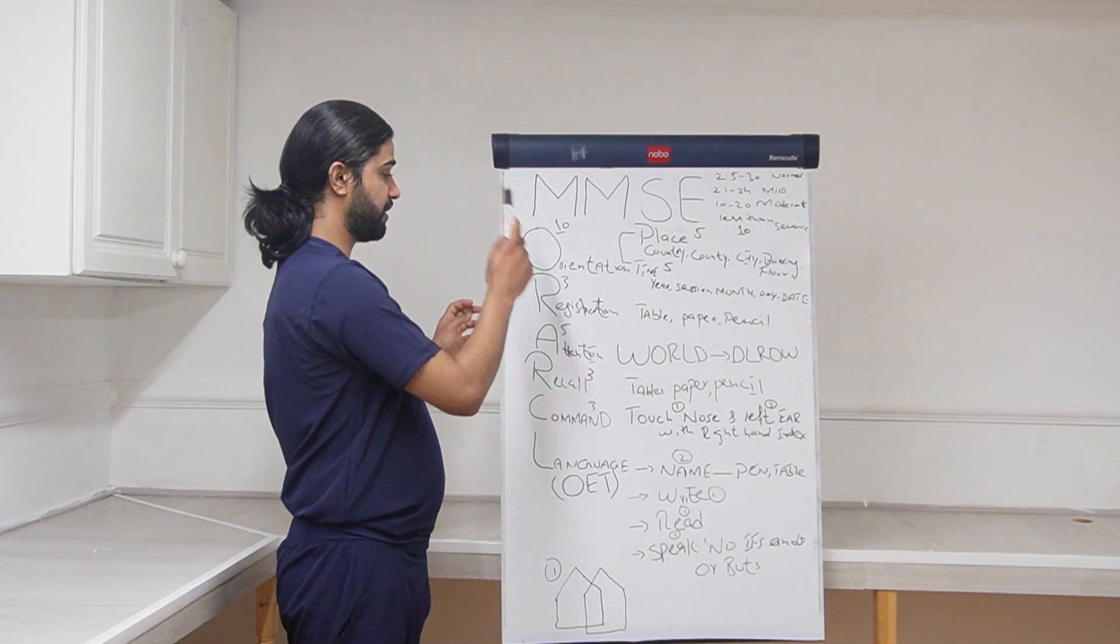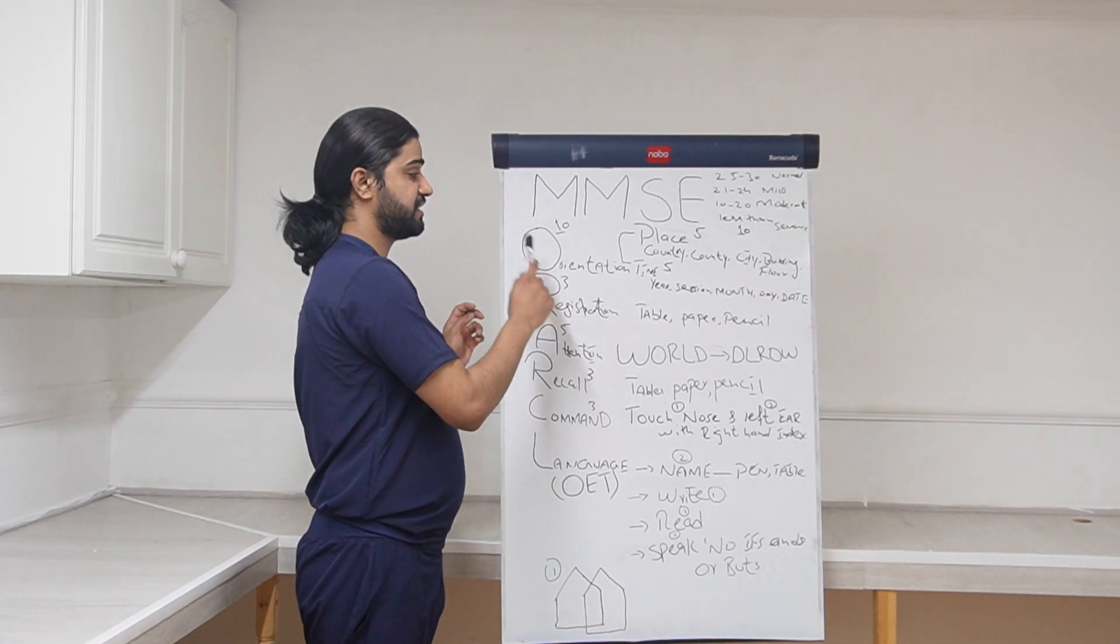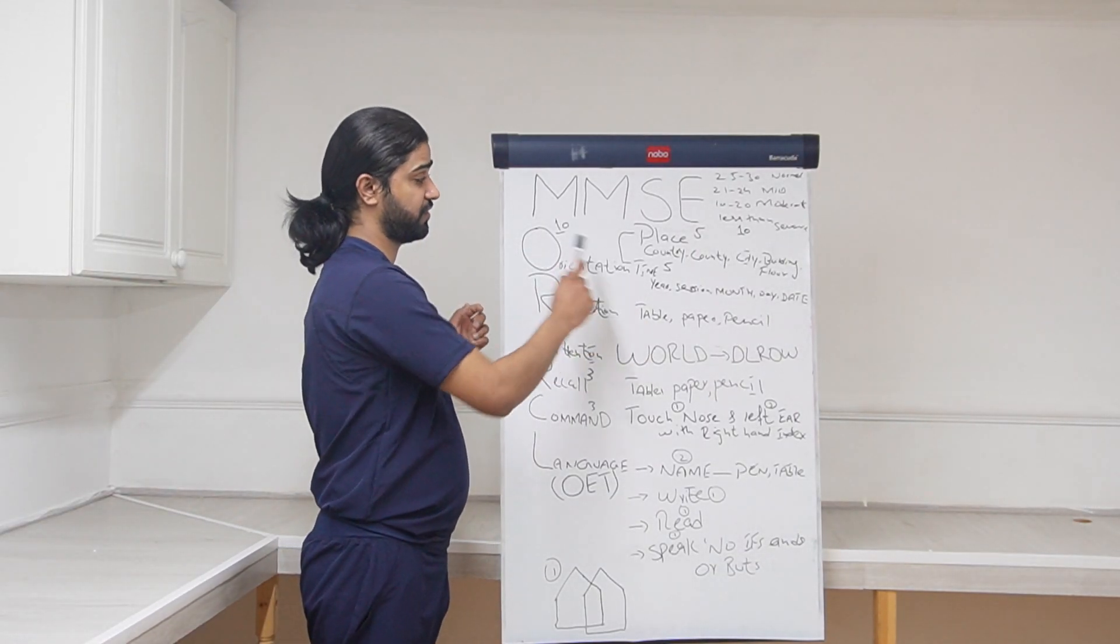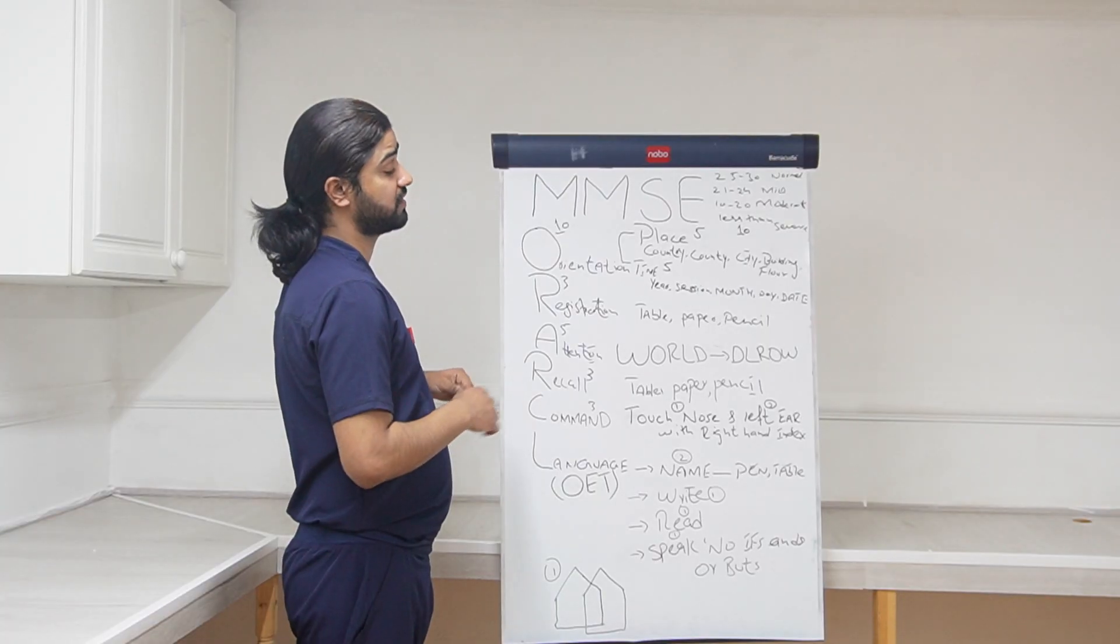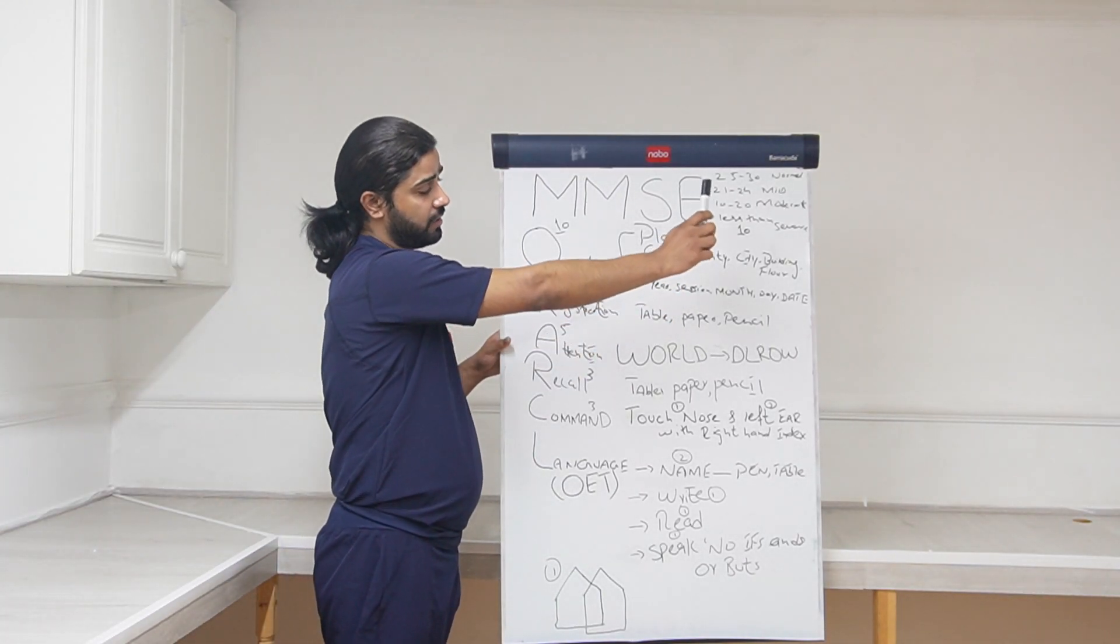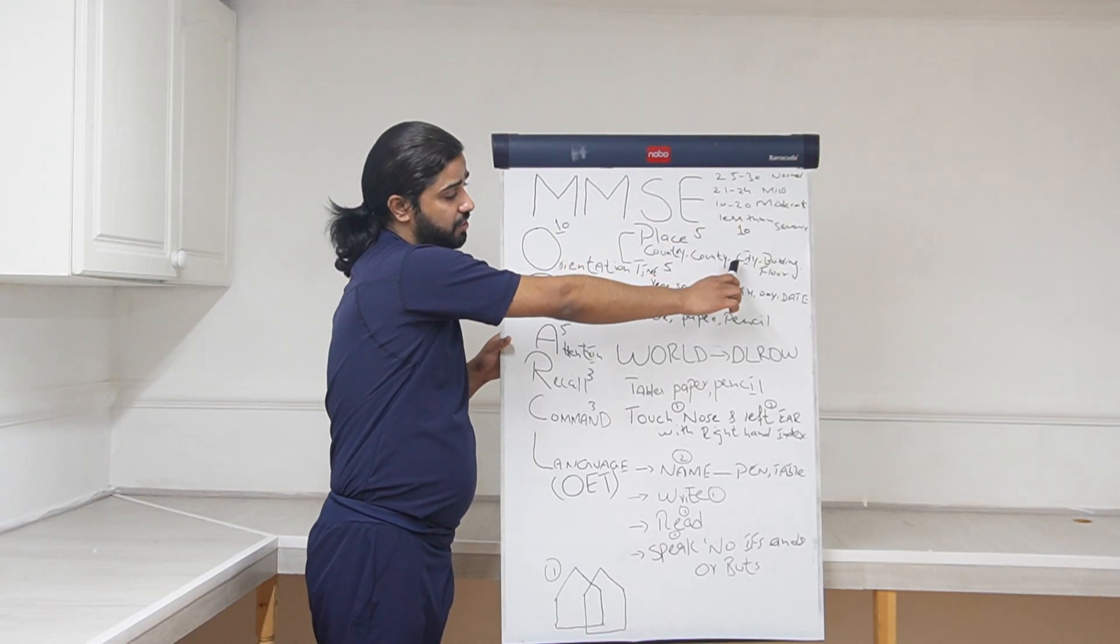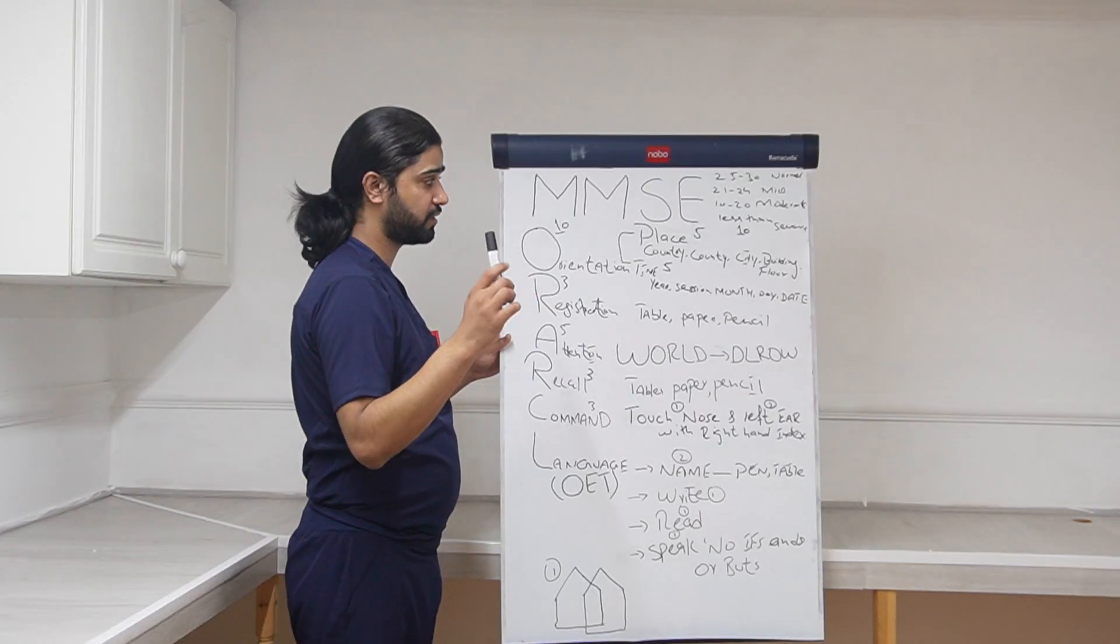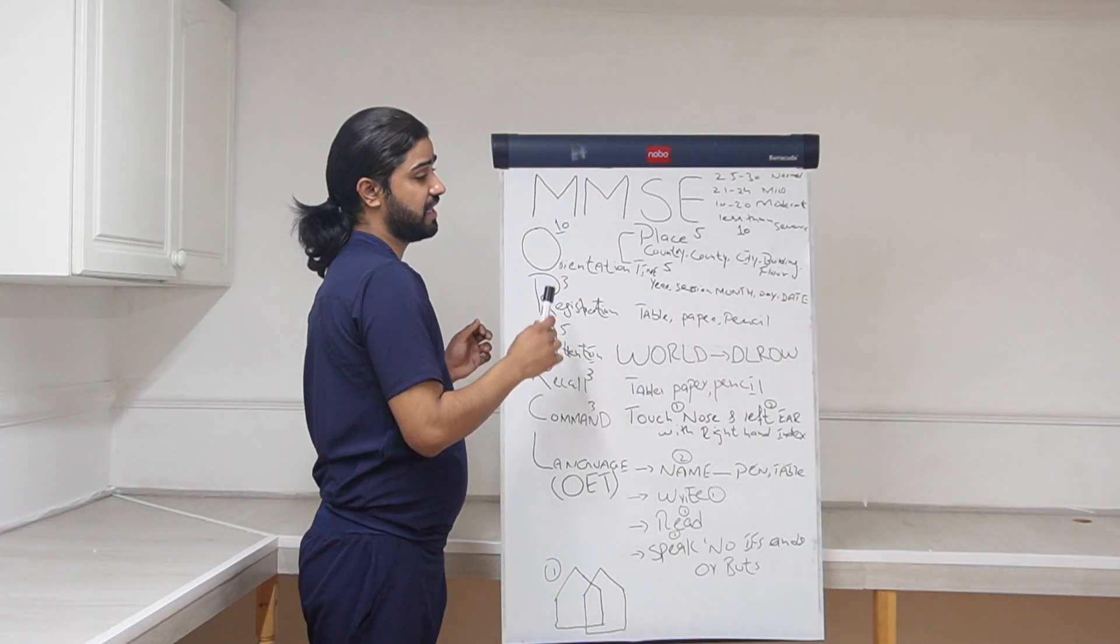First of all, orientation. Orientation has 10 marks. We will ask questions about place orientation and time orientation. In place orientation, we are going to ask 5 questions: in which country you are, in which county, in which city you are, in which building you are, and in which floor you are. Every question has 1 mark, total of 5 marks in place orientation.